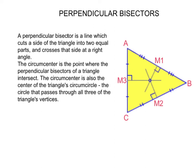They cross the sides of the triangle at an angle of 90 degrees, each one of them. They meet in a point called the circumcenter, which is also the center of the triangle's circumcircle. The circumcircle is the circle that passes through all three of the triangle's vertices.